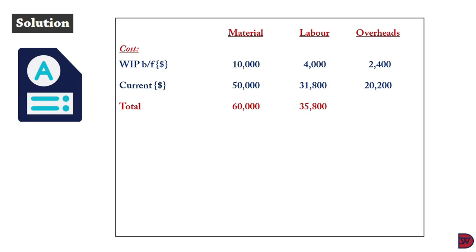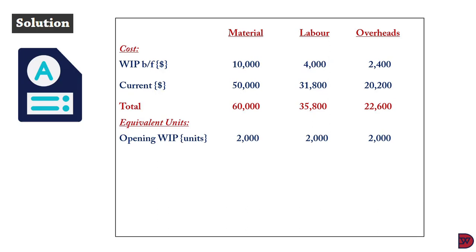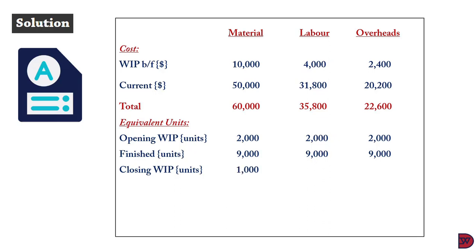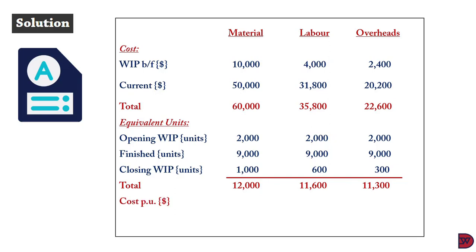Under the weighted average method, equivalent units include the full opening WIP brought forward, worked together with the current units. Finished units: 9,000 throughout. Closing WIP equivalent units: 1,000 for materials (100%), 600 for labor (60%), 300 for overheads (30%). Total equivalent units: 12,000 for materials, 11,600 for labor, 11,300 for overheads. Cost per unit: $5 for materials, $3 for labor, $2 for overheads — total $10.